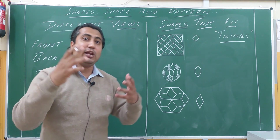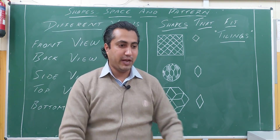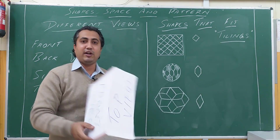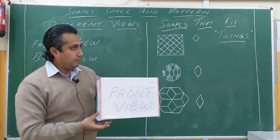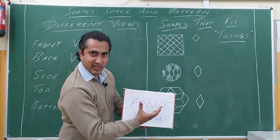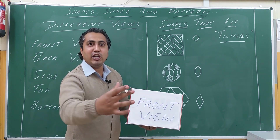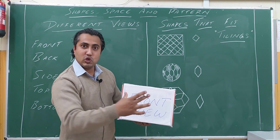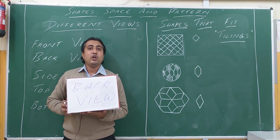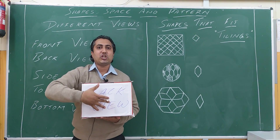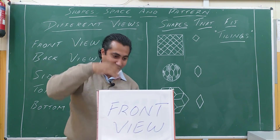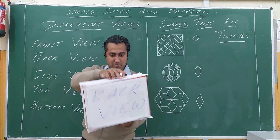I think you may not understand that much, but let me try to explain. Here I have a box in front of me. This is the box as it is. What do you see? This is the front view. So that is your front view. Suppose this box is facing away from you — so you can see the back portion, that is the back view. If it is facing you, you see the front view; I see the back view.